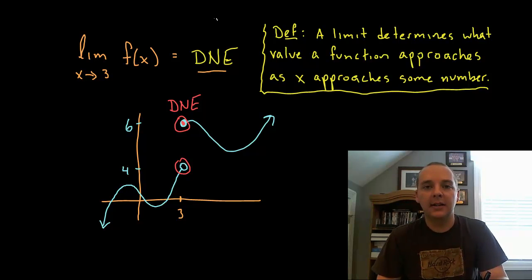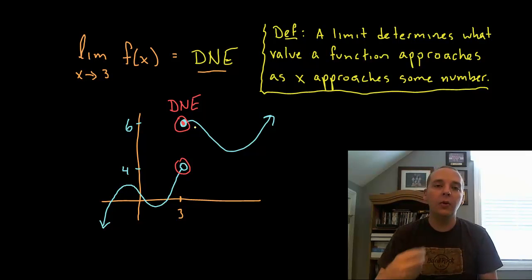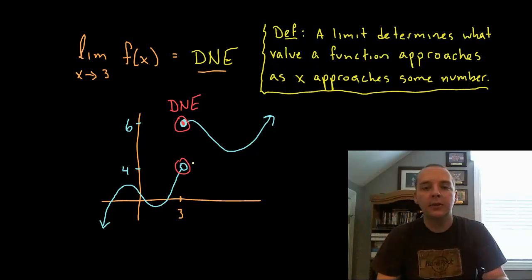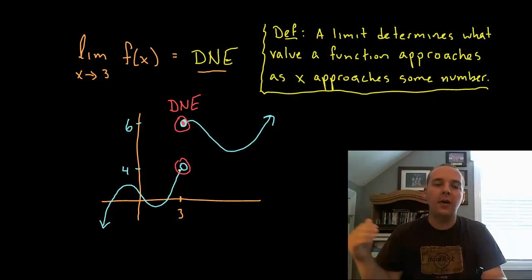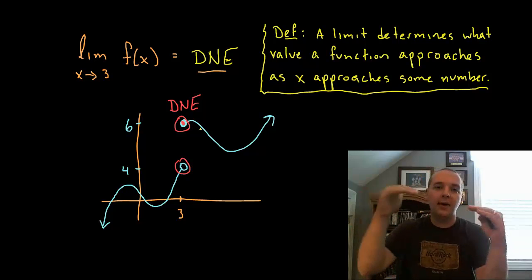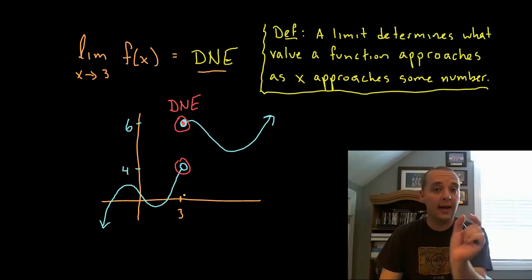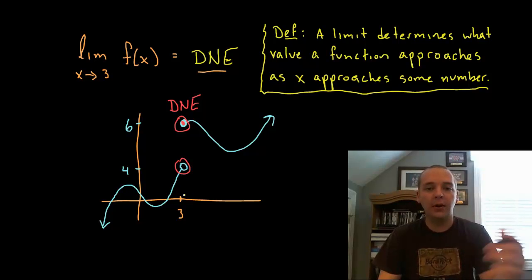Probably the last thing I can say that would clarify this is that the only way a limit can exist is if the two different one-sided limits agree with one another. So if the limit from the left does not match the limit from the right hand side, the limit will never exist. The one-sided limits from the left and the right have to be going to the same place. Now whether it's defined at that middle point 3 or whatever your x value is, is completely unimportant, it doesn't matter at all in regards to whether the limit exists or not.